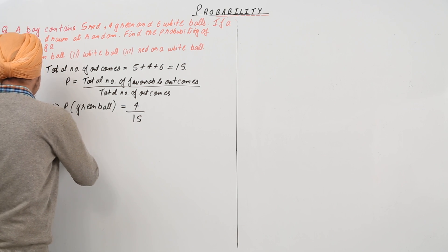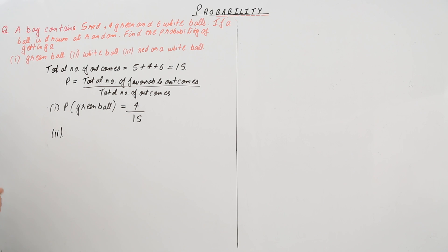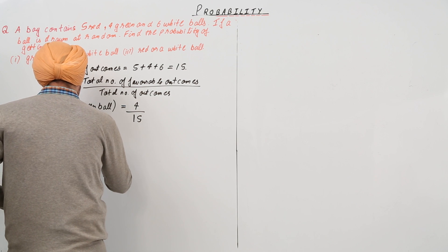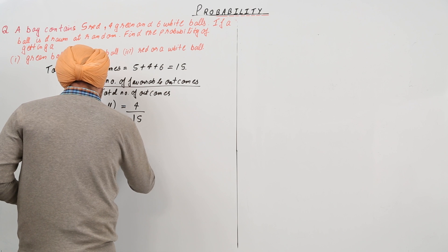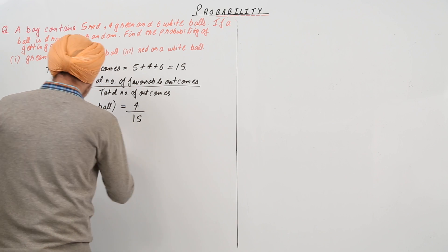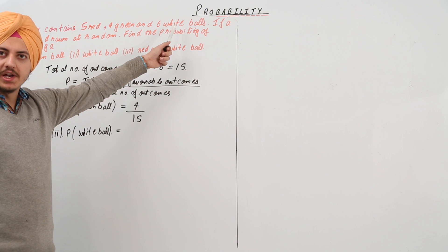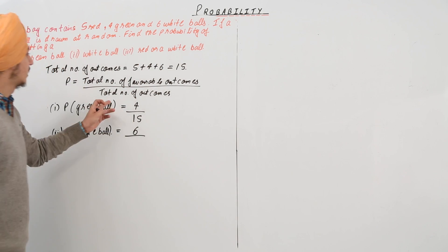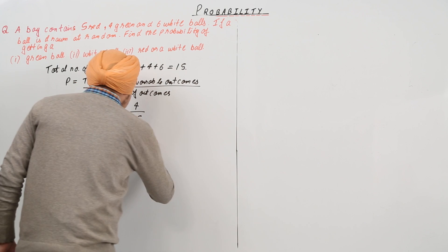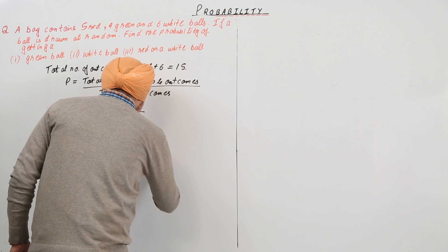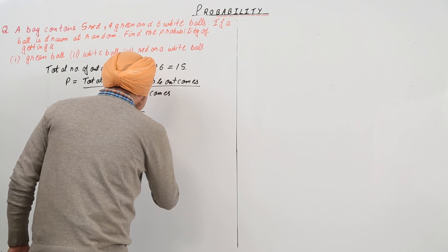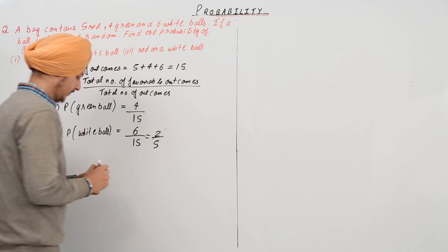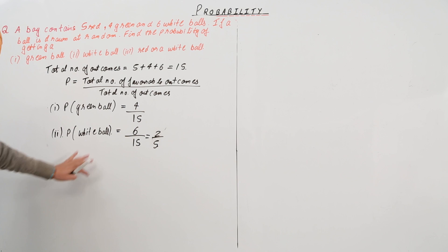The second part says find the probability of getting a white ball. There are 6 white balls, so the number of favorable outcomes are 6 upon the total number of outcomes of 15. This is equal to 2 by 5. So this is the probability of getting a white ball.